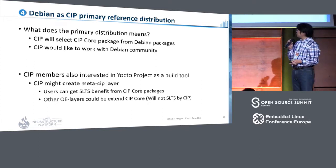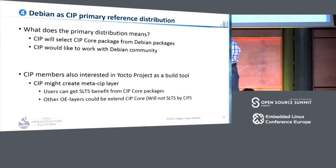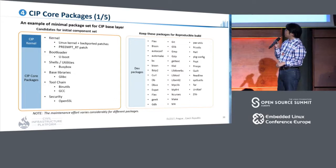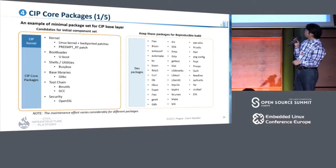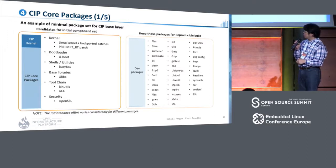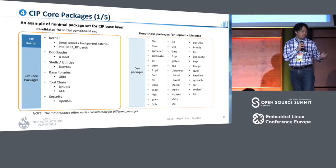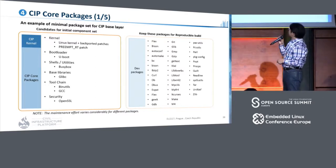CIP members are also interested in the Yocto project as a build system. The Yocto project is a quite flexible framework for us to build a CIP base layer. The shape of the CIP base layer is quite small at the beginning — there are less than 10 packages, which include the kernel itself. We should have the kernel of course, and very basic utilities and libraries, security features, and so on. As Urs said, we start as minimum as possible — this is our initial candidate for the component set.